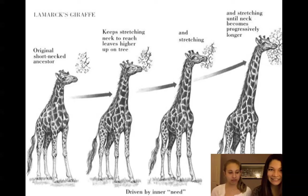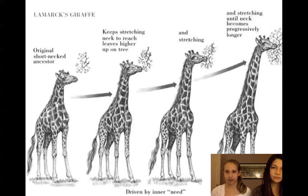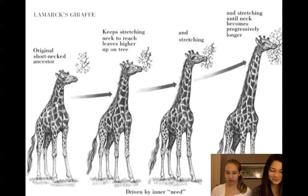Jean-Baptiste de Lamarck proposed the theory of use and disuse, which is the idea that parts of the body that are used become larger and stronger — such as in giraffes, because they use their necks to reach the higher leaves. He also said that species could pass modifications to their offspring, which is called inheritance of acquired characteristics. He was wrong because traits acquired during a species' lifetime cannot be passed on; only genetic traits can be passed on to offspring.